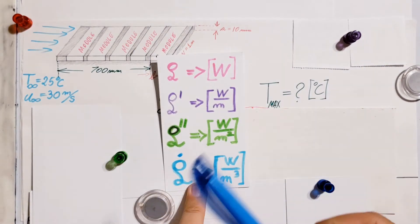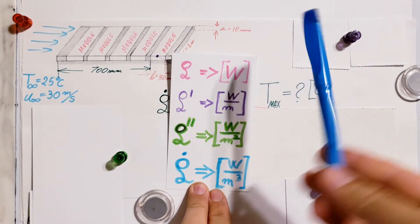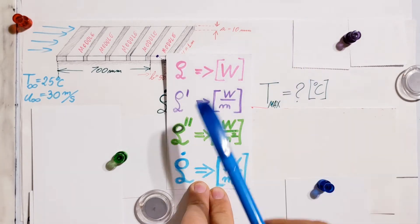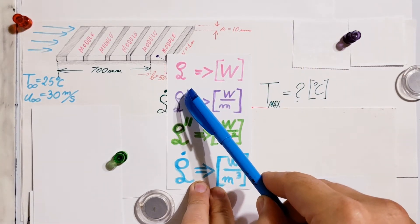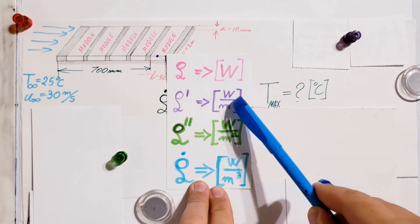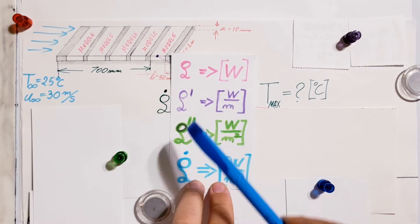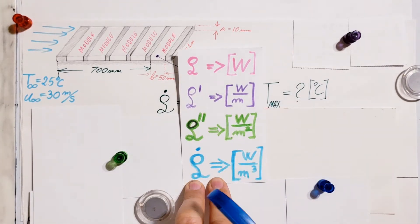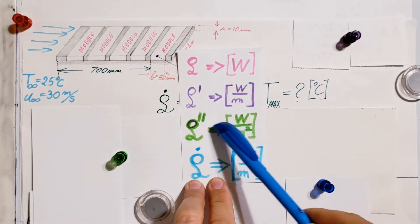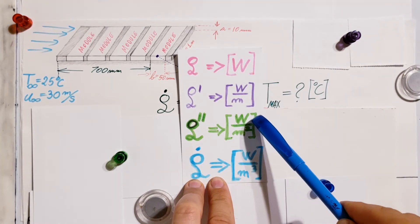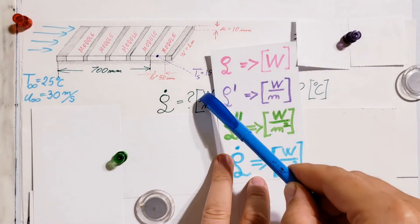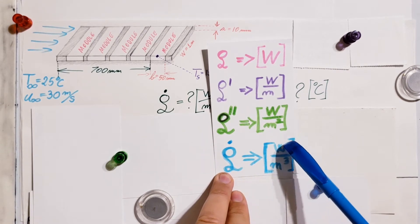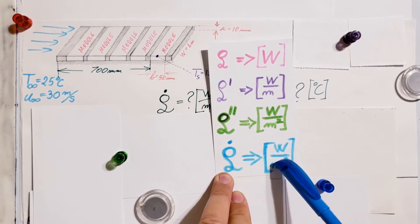Let's look at the units to understand better what we're dealing with. We have the regular q with units of watts. Then heat rate per unit length is watts per meter. Heat rate per unit area — flux — is watts per meter squared. What they are asking us for here is volumetric power generation, which is watts per meter cubed. That's what we are going for in this problem.